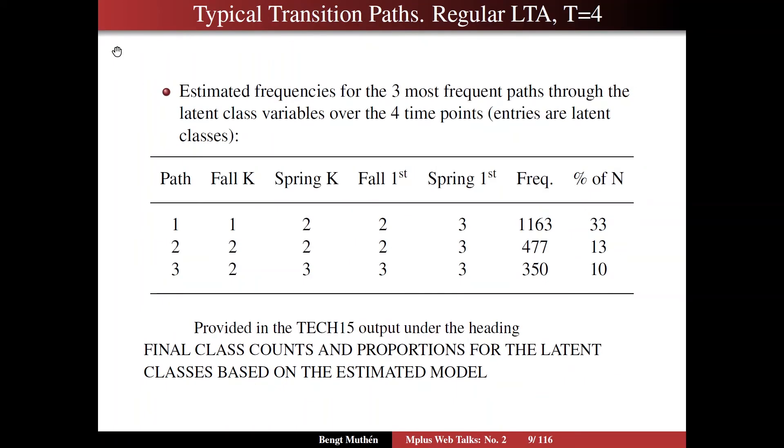On slide nine, I show another interesting way of looking at the data using latent transition analysis. We're going to take a look at typical transition paths. This is for regular LTA with four time points. In the table here, I give you the estimated frequencies for the three most frequent paths through the latent class variables across the four time points. Here are the paths. One, two, and three are the rows. The time points are fall of kindergarten, spring kindergarten, fall of first grade, spring first grade. And here are the number of people and the percentage of the total sample size.